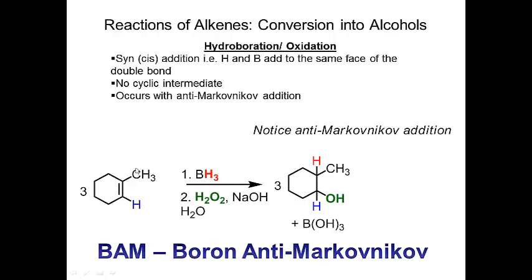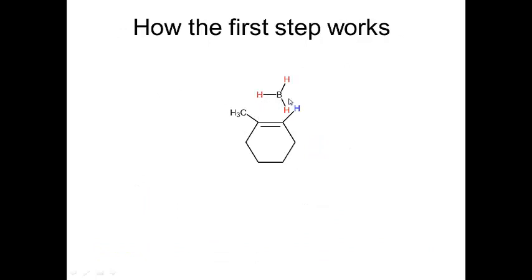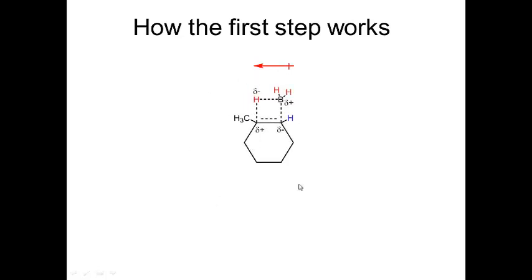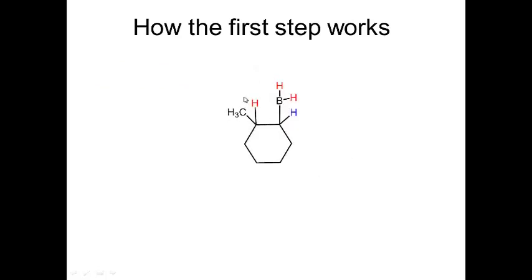H goes to the most substituted side. This is all color-coded — H comes from one reagent and OH comes from the second step. In the mechanism, boron comes in and the dipole on boron points toward hydrogen, lining up over the double bond where the partial positive charge sits. Boron is a source of hydride or H minus, so hydrogen is negative. H adds to one carbon and B adds to the other, giving an alkyl borane where H is on the most substituted carbon and B is on the least substituted carbon.